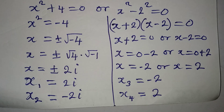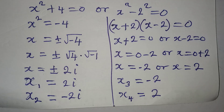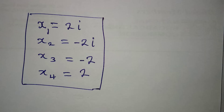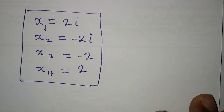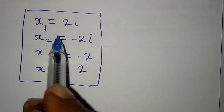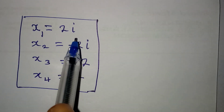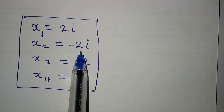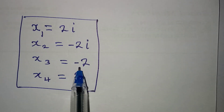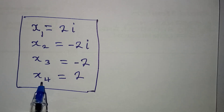We are going to have our x3 and x4. Our x3 is equal to minus 2, and our x4 is equal to positive 2. Let me bring the four solutions together. We have x1 to be 2i, x2 to be minus 2i, x3 to be minus 2, and x4 to be 2.